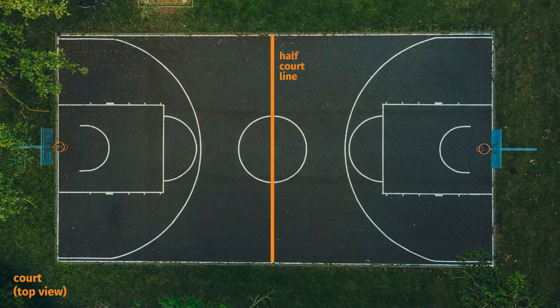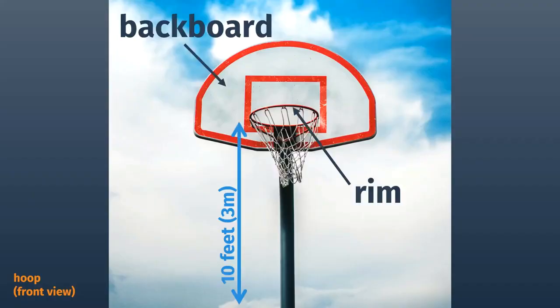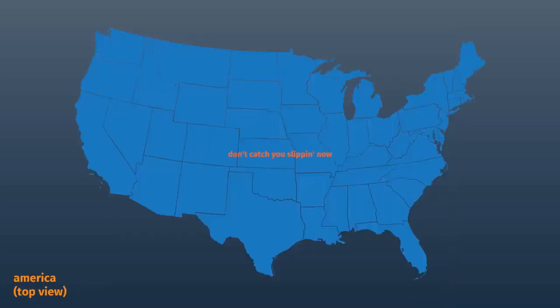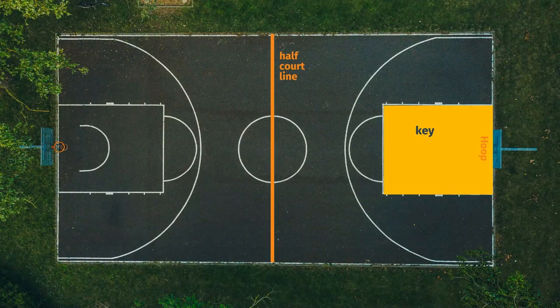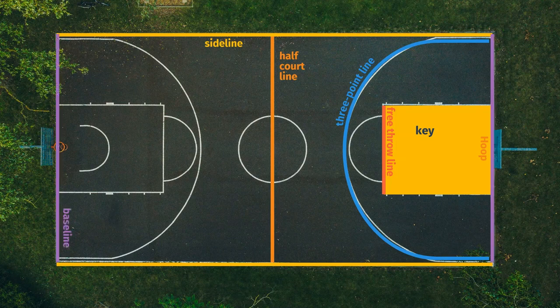This is a half-court line. This is a hoop. This is also a hoop. This is a backboard. This is a rim. This is America. This area is the key. This is a foul line. This is a three-point line.